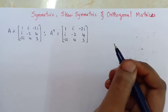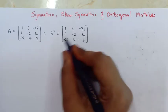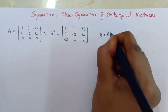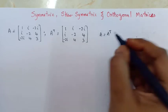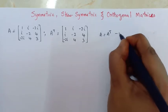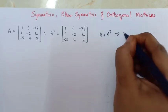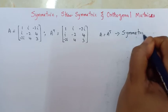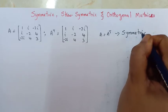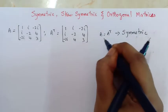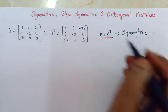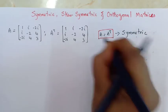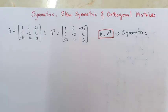As we can see here, both the matrices are the same, that is, A is equal to A transpose. If this condition is satisfied, then the matrix is called a symmetric matrix. So, the condition for a matrix to be symmetric is A is equal to A transpose.